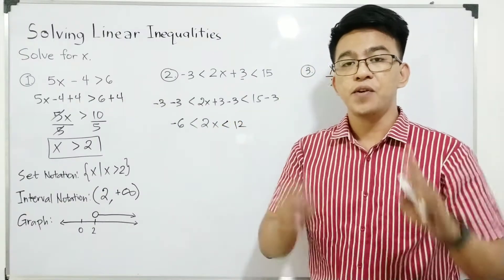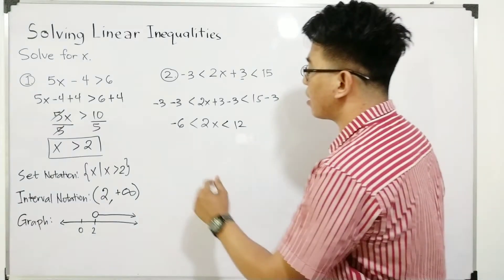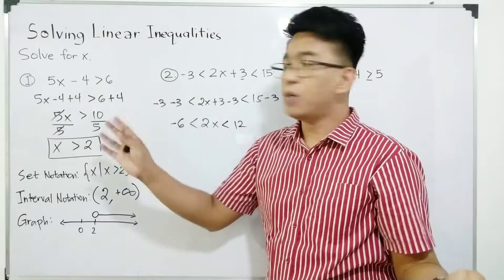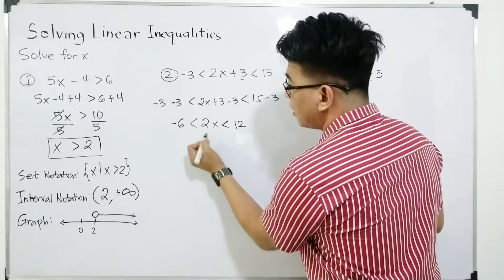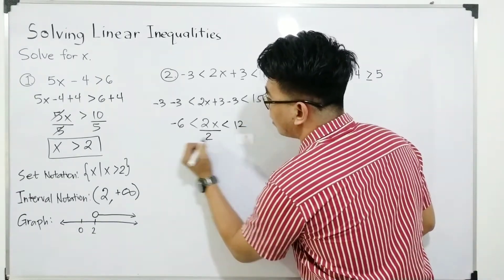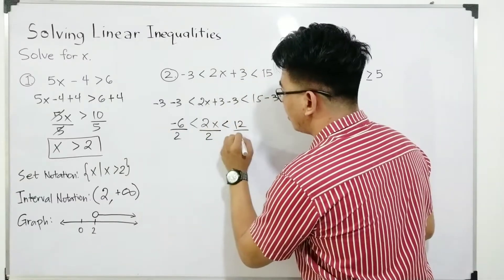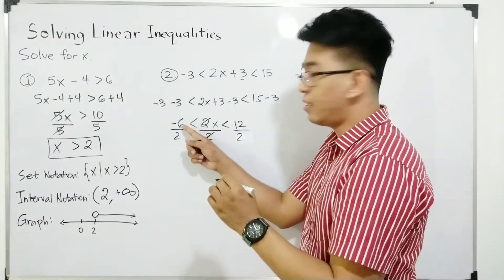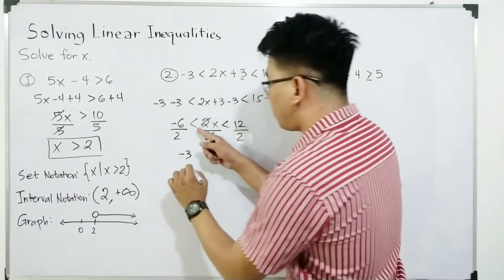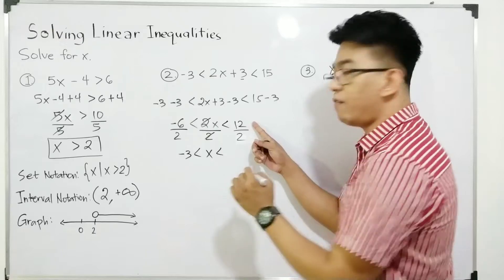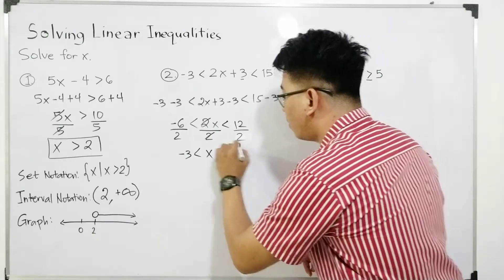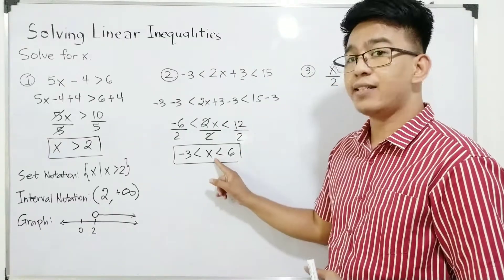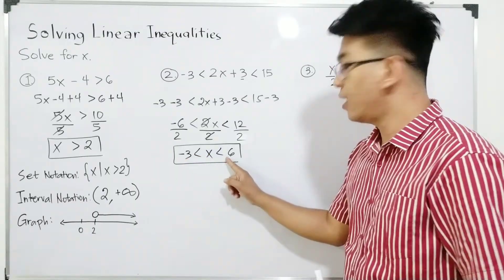We are not yet done because we are asked to solve for the value of x. We need to eliminate 2. Same as before, we eliminated 5 by dividing both sides by 5. Now, since our coefficient is 2, we eliminate it by dividing everything by 2. Cancel and cancel. What remains is x. Negative 6 divided by 2 is negative 3. Copy your symbol. 12 divided by 2 is 6. And the solution is: x is greater than negative 3 but less than 6.